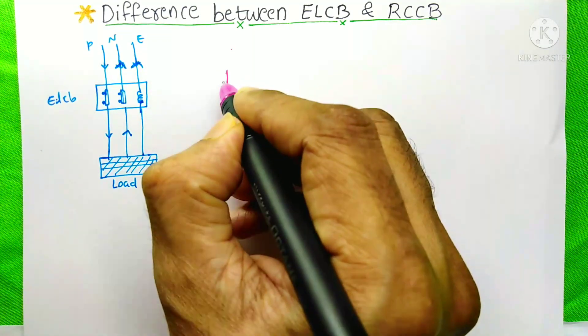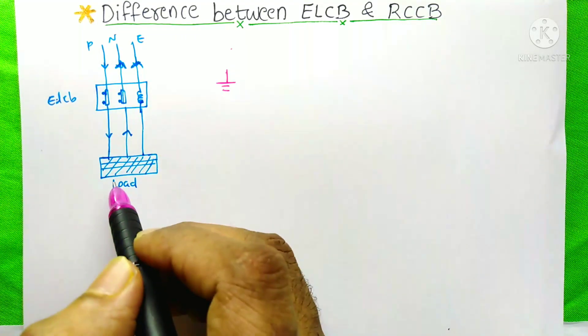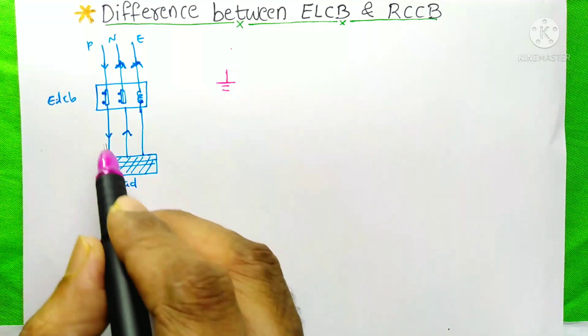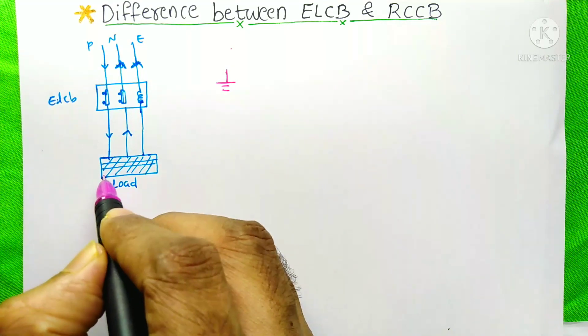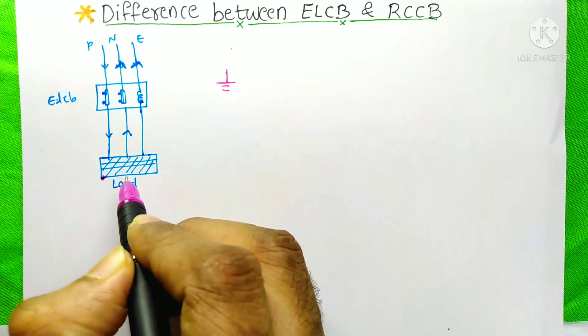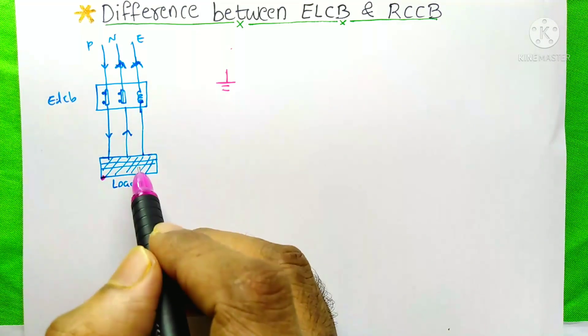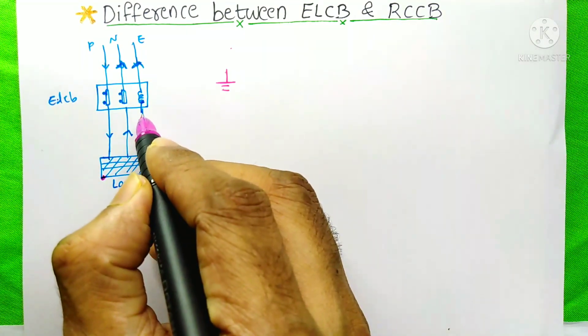You know that at our house, we earthed this one. But in any situation, if the phase touches this body of this load, then at that time, if you have a sound earth connection, then the current will go through this earth.